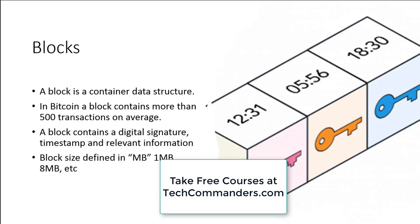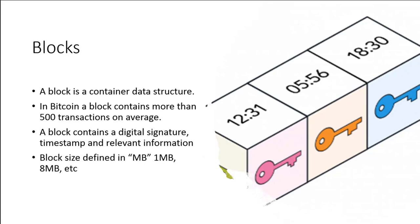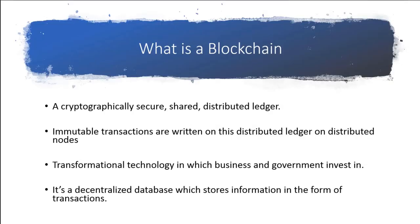We need to understand that a block is essentially the smallest unit when we talk about a blockchain. There are different block types — for example, we'll talk about the Genesis block. For this starting point, think of the block as a data structure. A blockchain is essentially a cryptographically secured, shared, and distributed ledger. Basically, we have a database that has cryptography and is distributed between many nodes — in some cases thousands of nodes. It's not centralized.